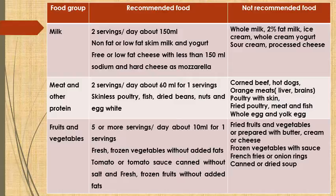Fruits and vegetables: recommended is five or more servings per day — fresh or frozen vegetables without added fats, tomato or tomato sauce canned without salt, and fresh or frozen fruits without added fats. Not recommended: fried fruits and vegetables, or those prepared with butter, cream, or cheese, frozen vegetables with sauce, french fries, onion rings, and canned or dried soups.